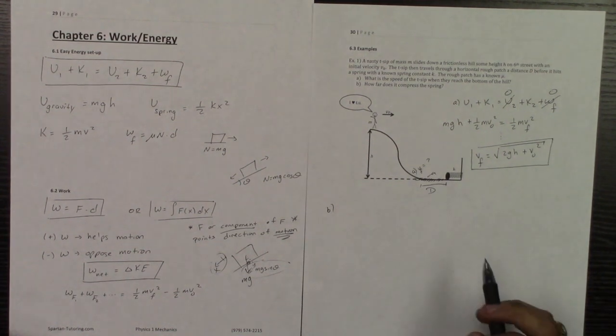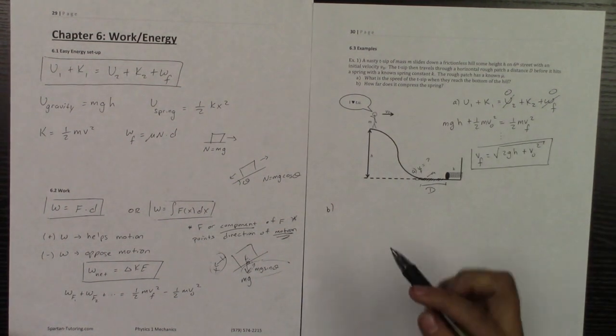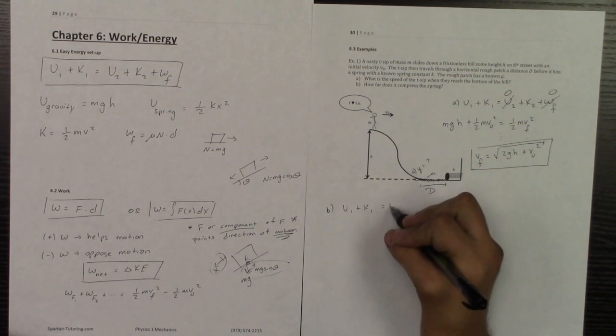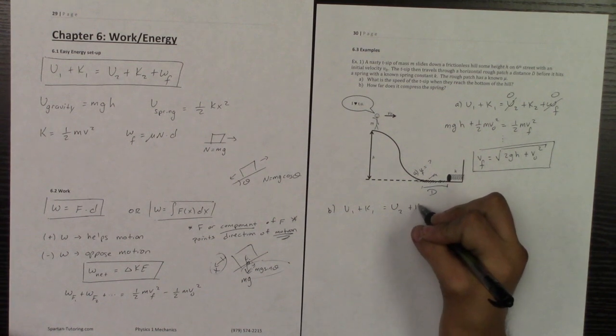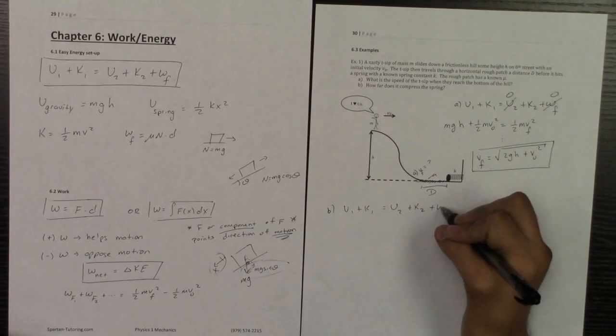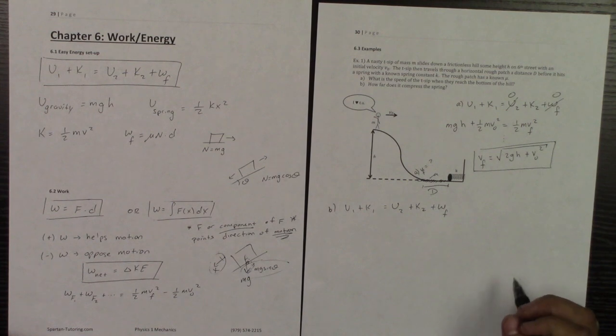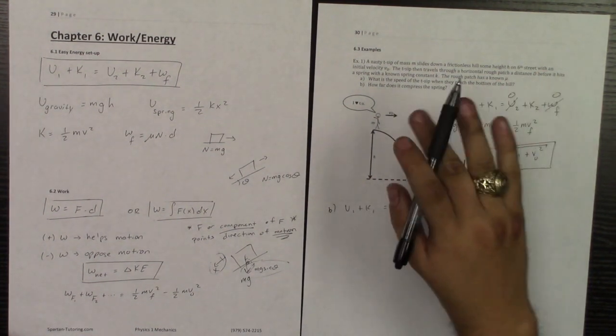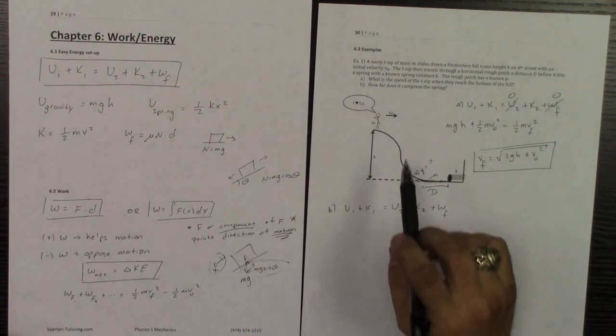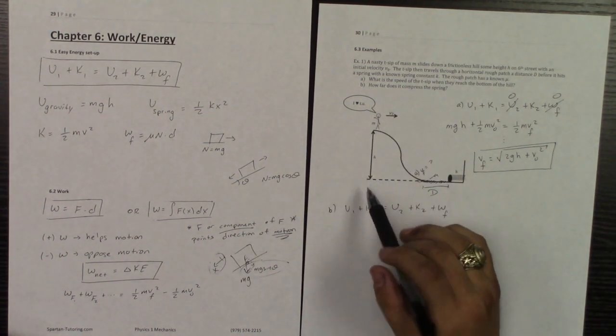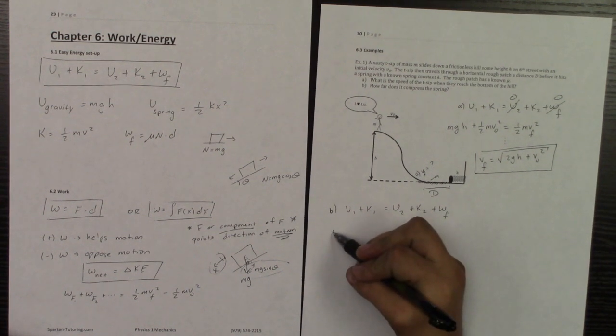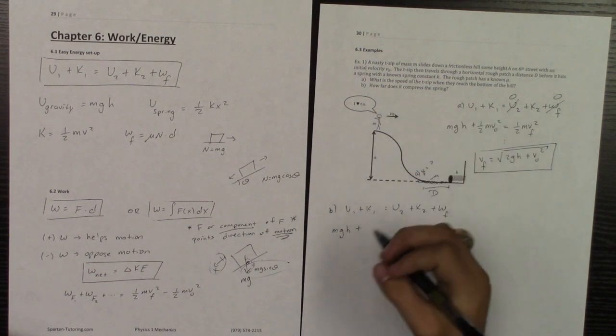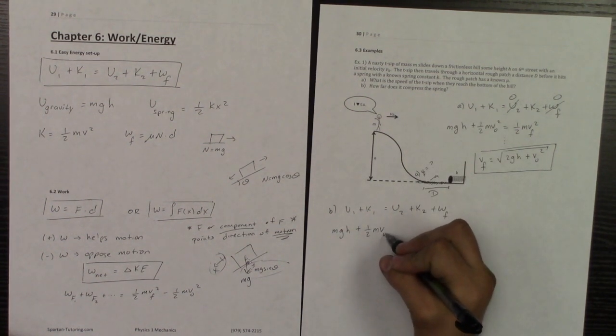Part B says, how far does it compress the spring? And so again, let's go u1 plus k1 equals u2 plus k2 plus any work done by friction. So what I'm going to do is I'm going to call the initial portion still the top. That way, in case this was the only question asked, you'd still know how to deal with it. So at the top, again, I have an initial potential energy of mgh and it had an initial velocity of 1 half mv0 squared.